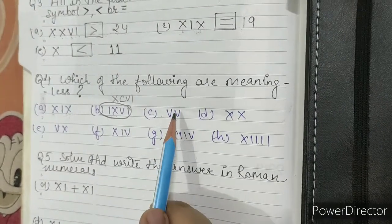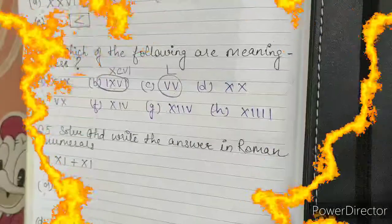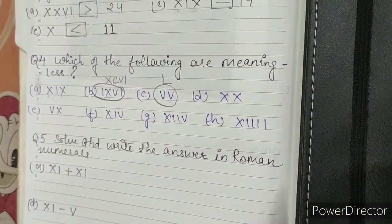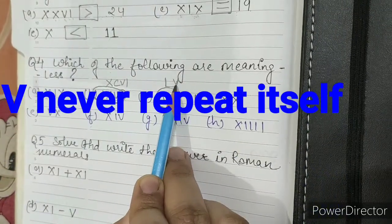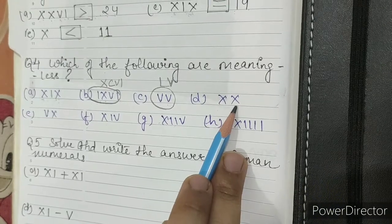Part C: VV. This is also wrong. If we want to write 50 or 55, 50 is written as L and 55 is written as LV. Part D: XX. It is 20.